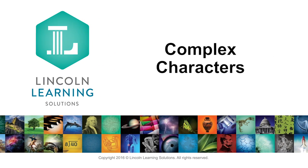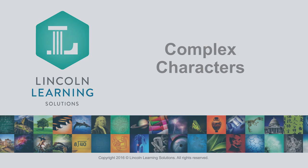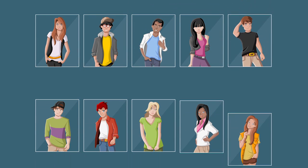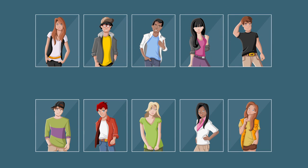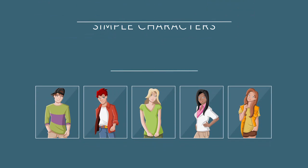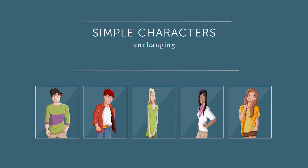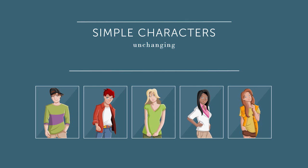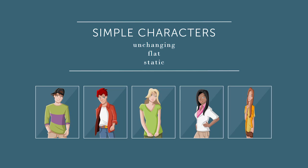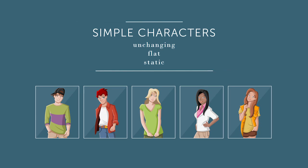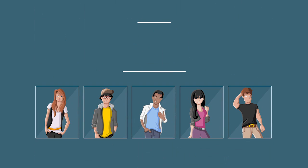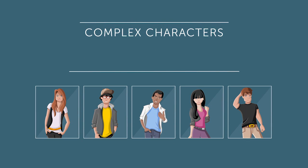Stories contain characters with a range of personalities and levels of complexity. Some stories contain simple characters, which do not change throughout a story. Simple characters, also called flat or static characters, do not grow, learn, or realize things over the course of a work. Some characters are more complicated. These characters, called complex characters, are more dynamic.